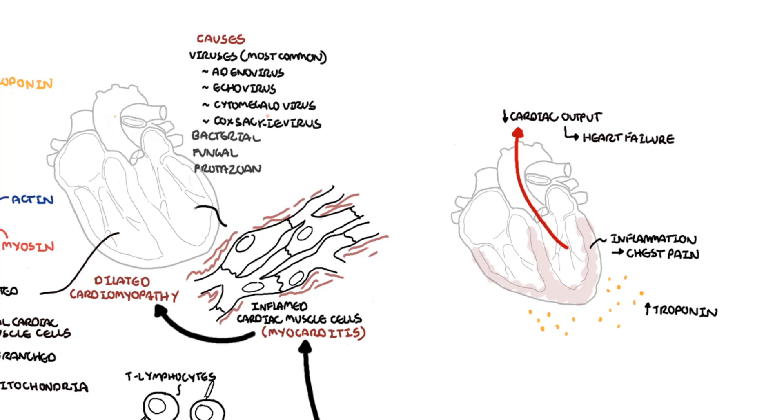Some people may need support with inotropes to increase heart contractility or mechanical circulatory support to assist the heart in contraction. Prior to the pain and elevation of troponin, patients may be asymptomatic, or they may have a viral prodrome which is manifested as fevers, myalgias, and muscle soreness. Viruses are the most common cause of myocarditis.